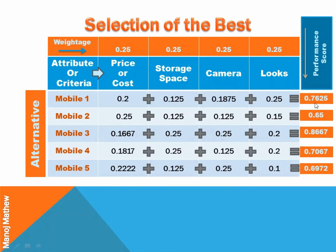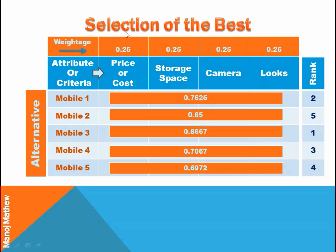Similarly, we can obtain the performance score of all other alternatives. Ranks can be allocated to mobiles based on the performance score. Based on the weightage assigned to each criteria, mobile 3 is the best alternative among all others as it has rank 1. Even if mobile 3 is not available in the market, we can go for the next best, i.e. mobile 1, which has rank 2.